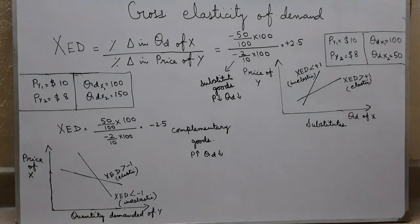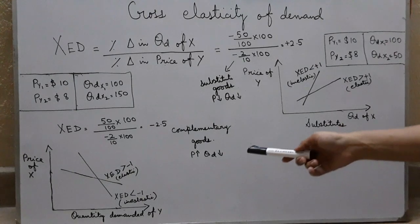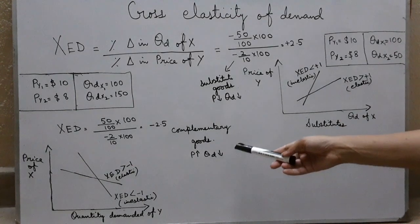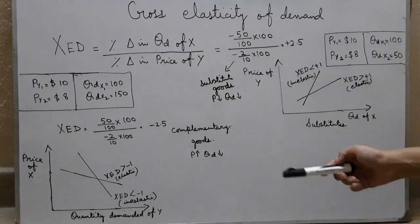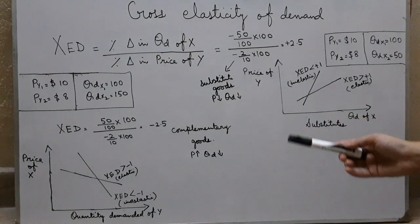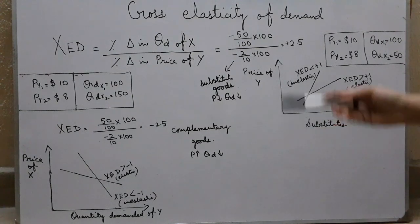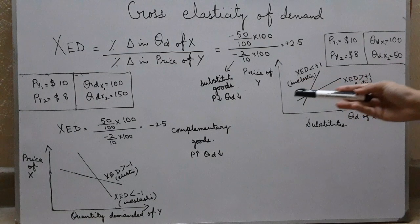Why? Because if people are not buying cars, then definitely they would not be needing other complementary goods, that is petrol. So demand would decrease. This is the inverse relationship between complementary goods and positive relationship between substitute goods.